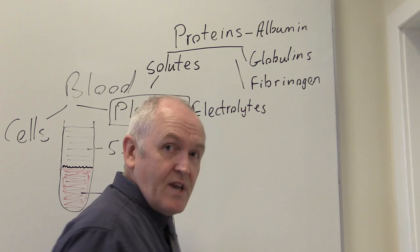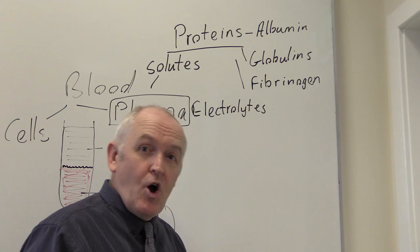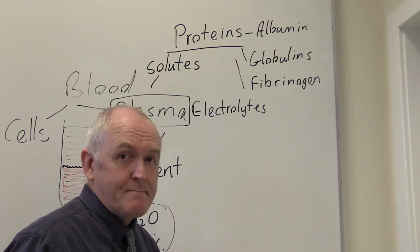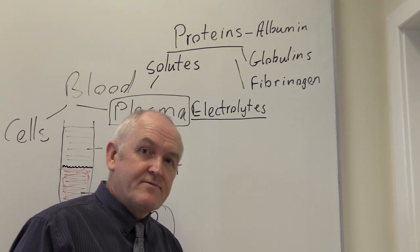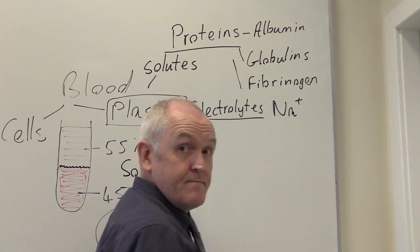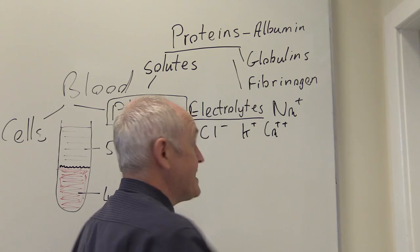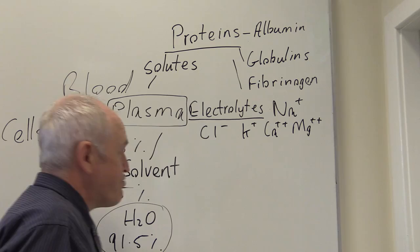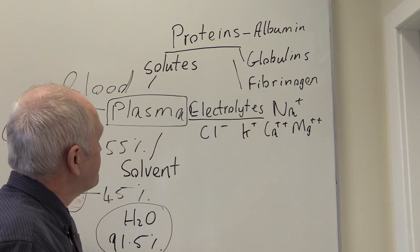Electrolytes are ions — atoms with a charge — and they are very important because we need the correct distribution of electrolytes on both sides of the cell membrane in excitable cells. The volume of the electrolytes has to be finely regulated and homeostatically controlled so we don't have too much or too little of a particular electrolyte. The common ones are sodium (Na⁺), chloride (Cl⁻), potassium (K⁺), calcium (Ca²⁺), and magnesium (Mg²⁺), all present as ions in solution in the plasma.